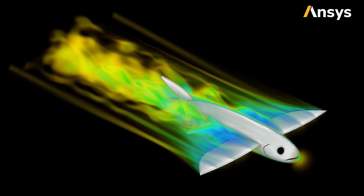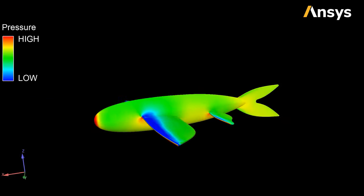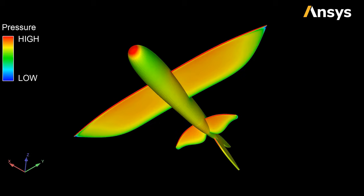Even flying fishes use lift to glide for long distances and escape predators after jumping out of the water. With ANSYS simulation technology, we can explore how they use their fins to generate lift and fly.